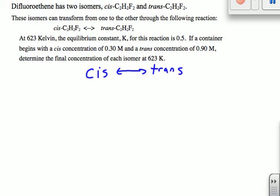And let's start again by writing what I know of our ICE chart. So we have initial, change, and equilibrium. According to this, you're starting with a concentration of 0.30 for the cis isomer and concentration of 0.90 for the trans isomer.